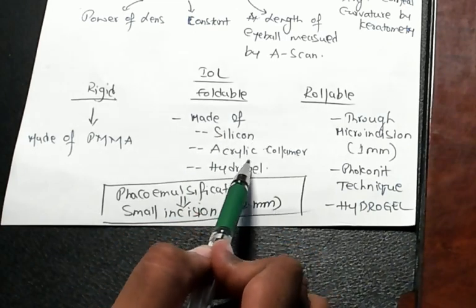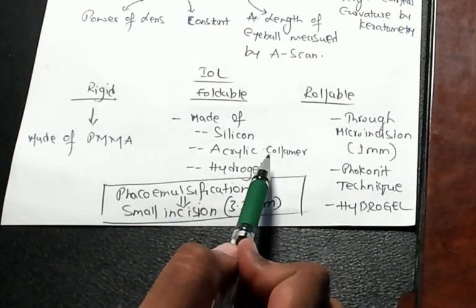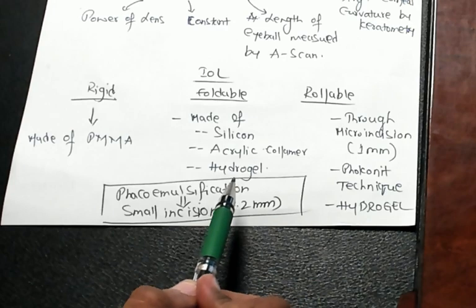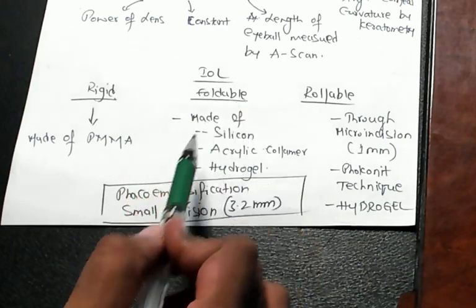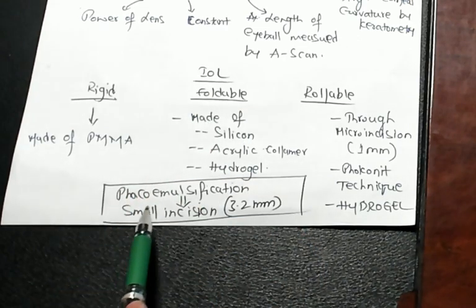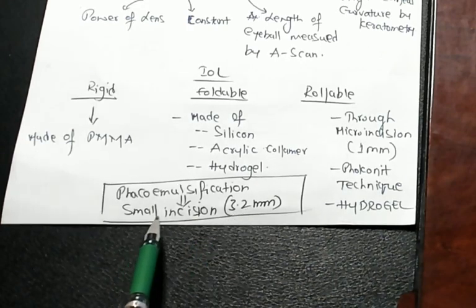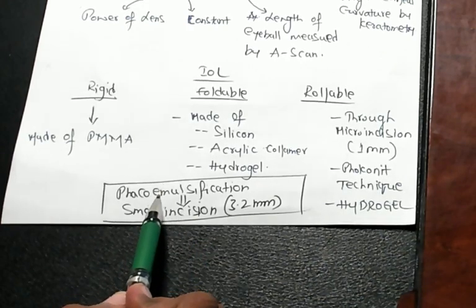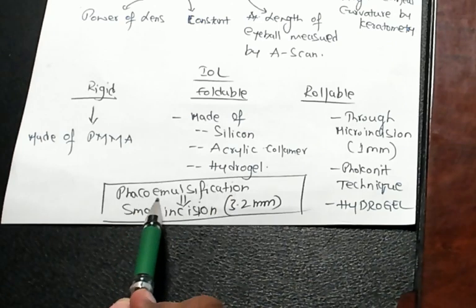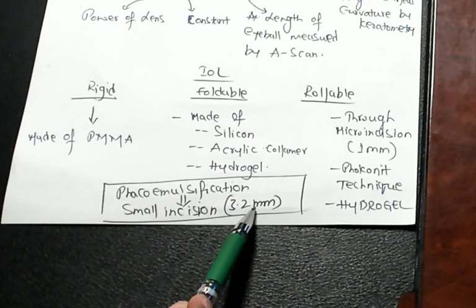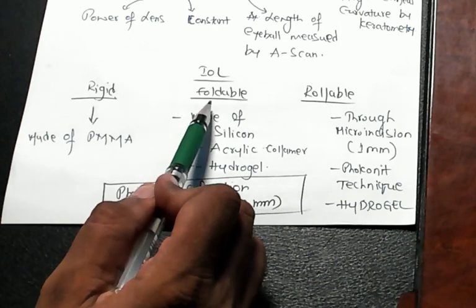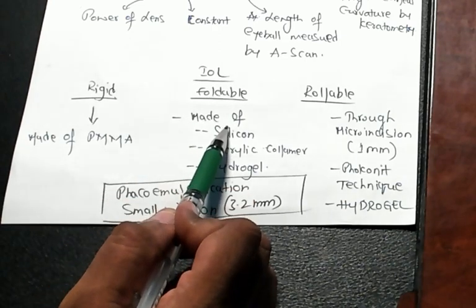And how do you put a foldable IOL doctor? Small incision, 3.2 mm incision. Or phaco emulsification, liquify the lens, small incision 3.2 mm, through that you will bring the foldable IOL.